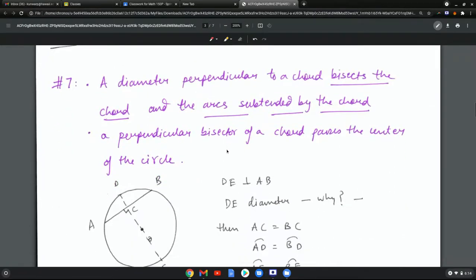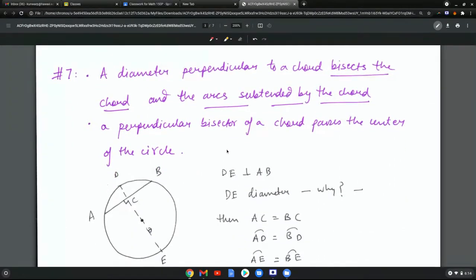This one is very helpful. It says a diameter perpendicular to a chord bisects the chord. So here is my center. From the center I take any diameter, making sure this is 90 degrees, and if there's any chord on the way, then I get AC equal BC.